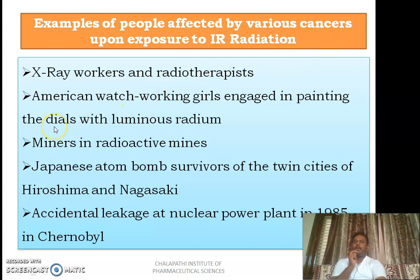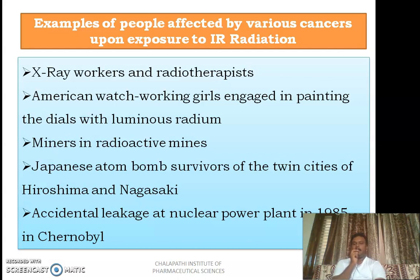Miners working in radioactive mines will also be at great risk of developing cancers due to chronic exposure to IR radiation. Japanese atom bomb survivors of Hiroshima and Nagasaki, and those affected by the accidental leakage of the nuclear power plant in Chernobyl in 1985, all got chronically exposed to IR radiation and developed various types of cancers.